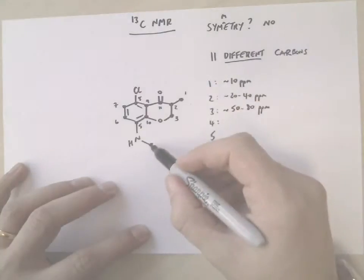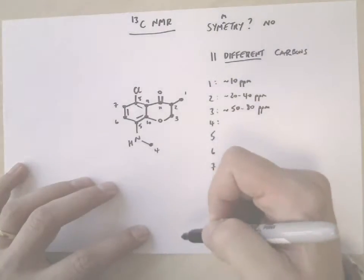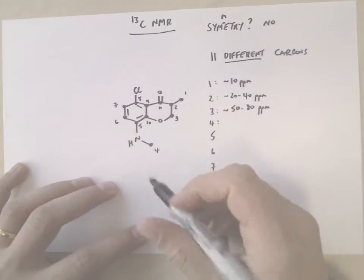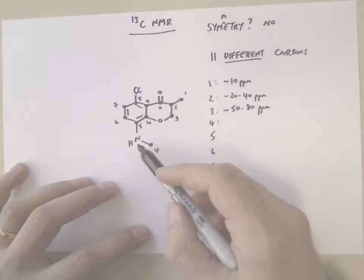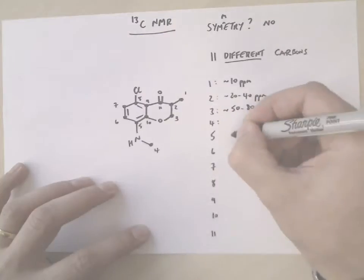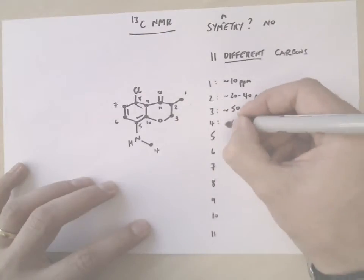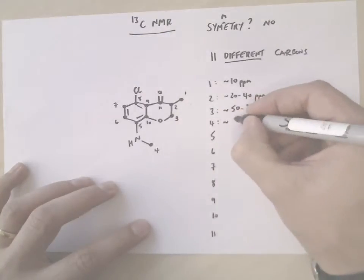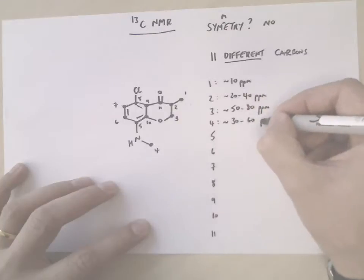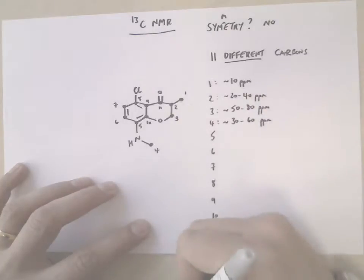Similarly, carbon 4 is directly attached to nitrogen. But as we saw in the proton NMR, the nitrogen is not as electron withdrawing or not as electronegative as oxygen, so it doesn't have as much of an effect. But it still can be found between 30 and 60 ppm.